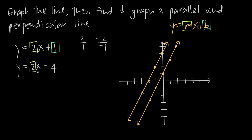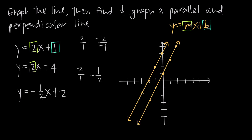For a perpendicular line, we need to take the negative reciprocal of the original slope. My original slope is 2, or 2 over 1 as a fraction. To take the reciprocal, I flip it upside down — the denominator becomes the numerator and vice versa — so the reciprocal of 2 over 1 is 1 over 2. Then taking the negative gives me negative 1 half. So the slope of my perpendicular line needs to be negative 1 half, giving us y equals negative 1 half x plus 2.